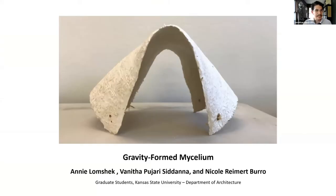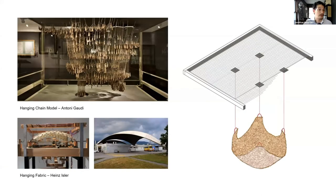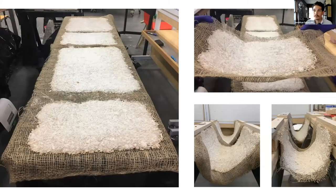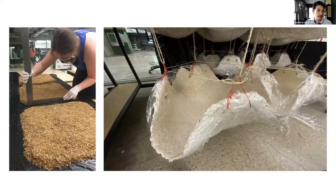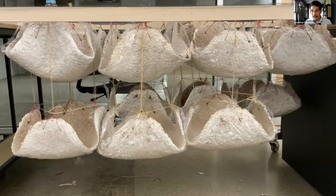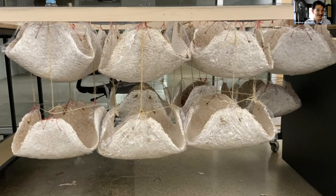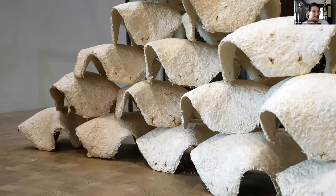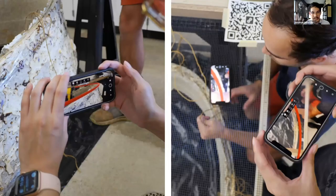The last project is gravity-formed mycelium — a very old concept used by Gaudí or Heinz Isler, basically using model-making and form-generation processes and bringing them to mycelium at the scale of the model. Preliminary tests involved growing mycelium into burlap and hanging them with some success. The scale-up project involved making many of these and beginning to stack them into a screen structure. The creativity demonstrated by the students was incredible — tying things together, discovering that mycelium could hang and take a certain amount of stress, drying them in hanging configurations, and making a small screen wall now displayed in the building.